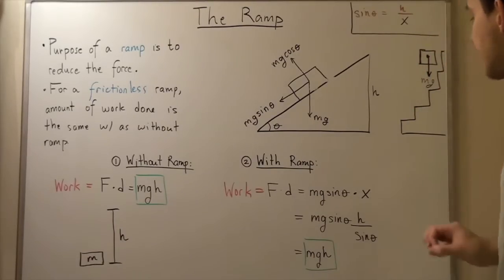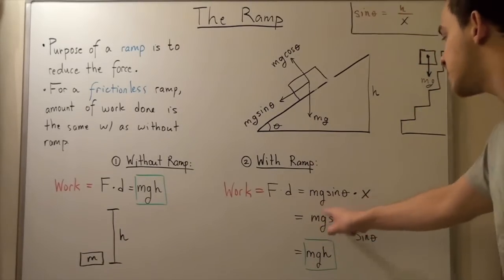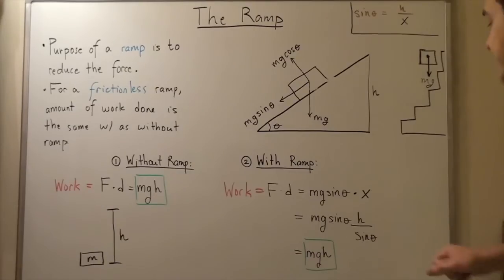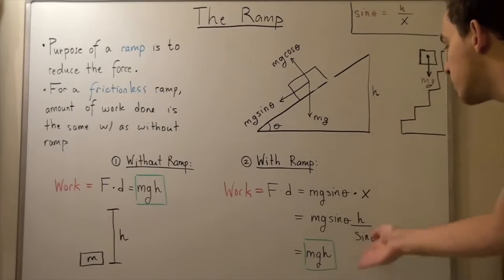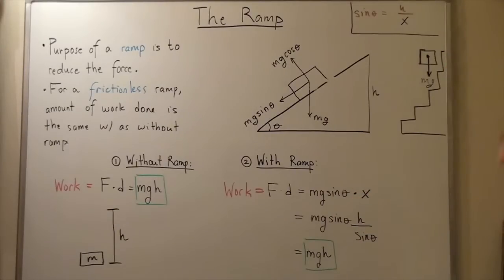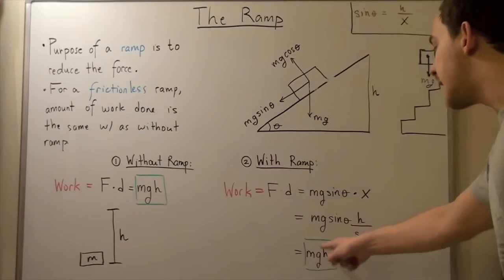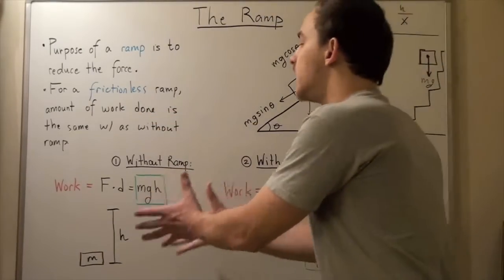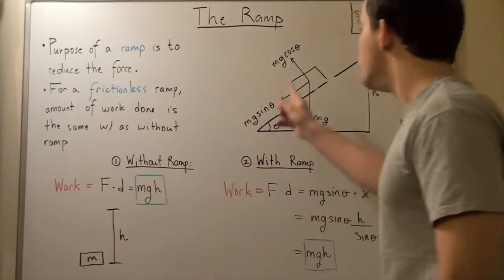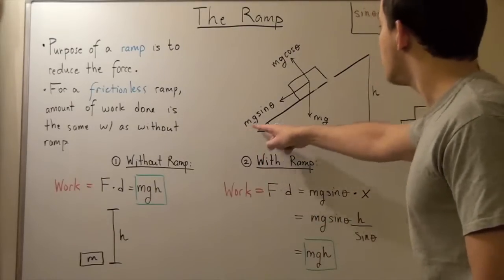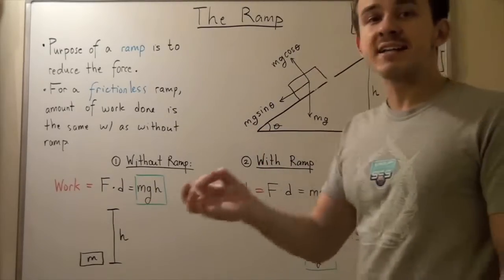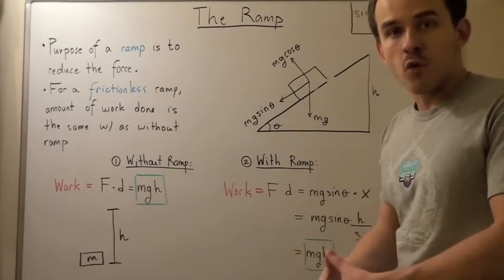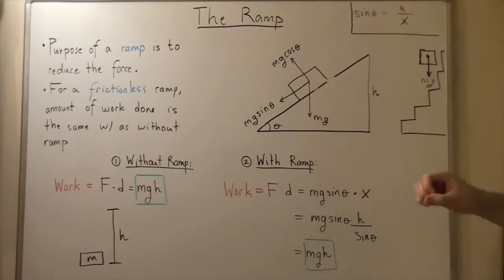So let's plug that x into this x. So we get m times g times sine theta multiplied by h divided by sine theta. And notice now that the sine on the top and on the bottom will cancel out. And we see that our work is simply m times g times h. So that's exactly what we meant by this statement. The work done by the ramp in moving my box with less force up a longer distance is exactly the same work as we move the box with a larger force over a shorter distance h.